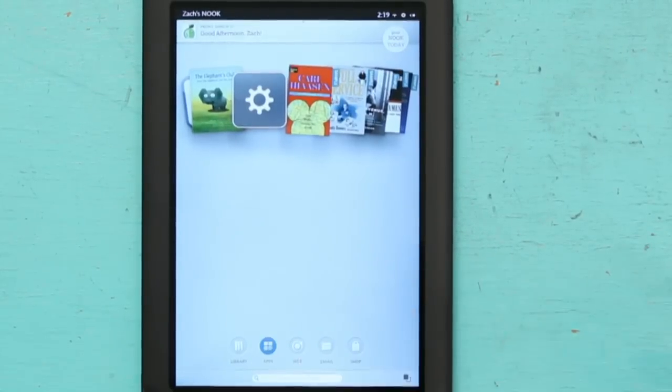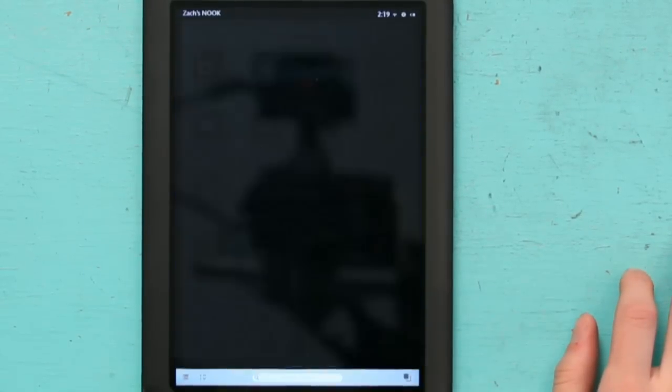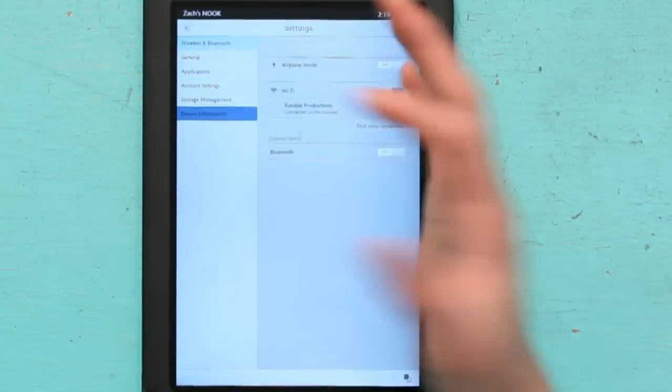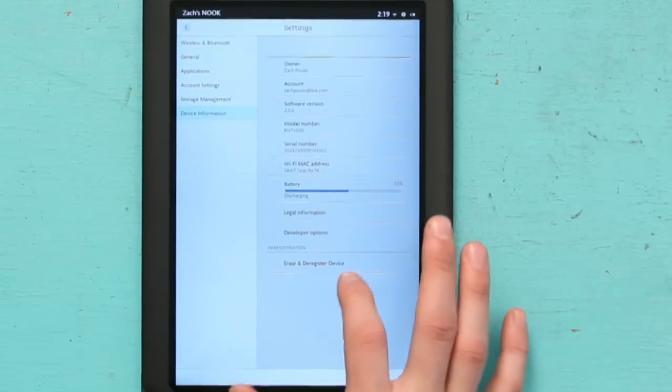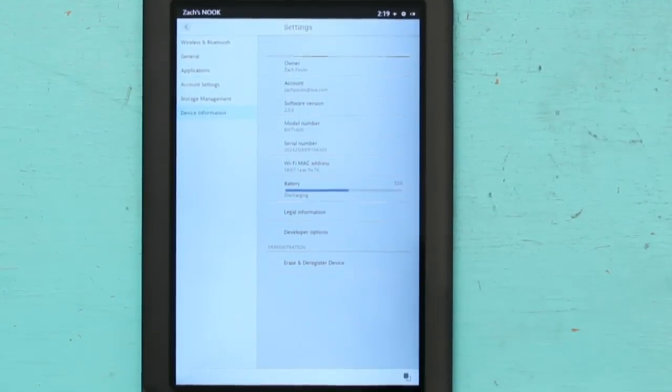You can erase your firmware by going into your settings menu, going to device information, and hitting erase and deregister. You will have to re-register your device, but if you already have an account, that's not a problem.